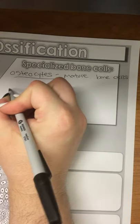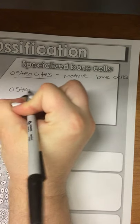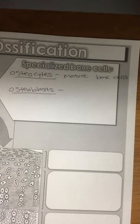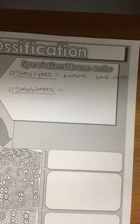We have osteoblasts, and they're the ones who are building the matrix. Once the matrix forms all around them, then they become an osteocyte.